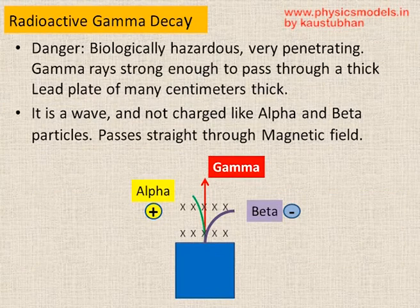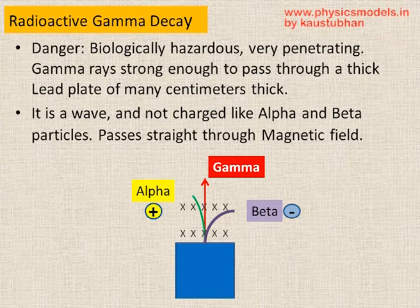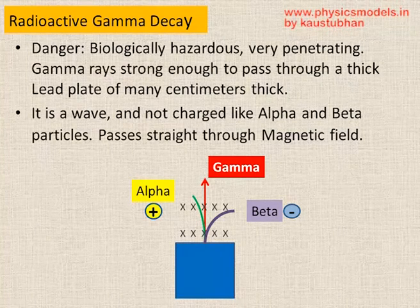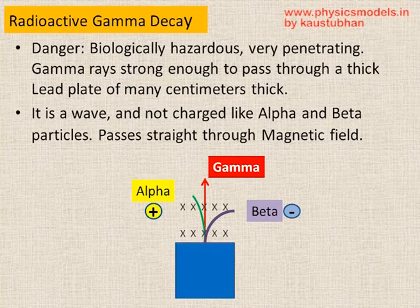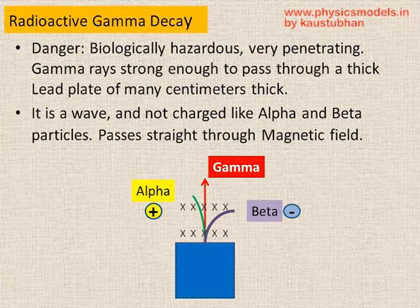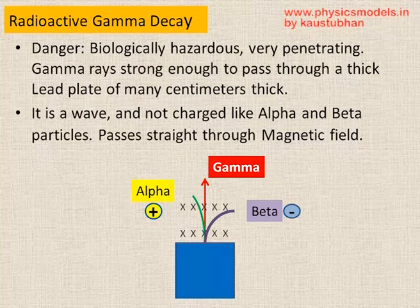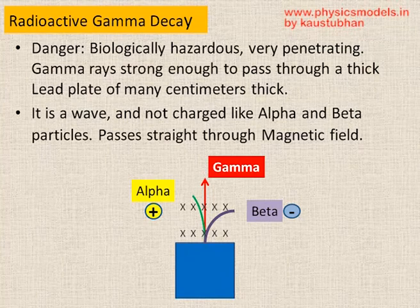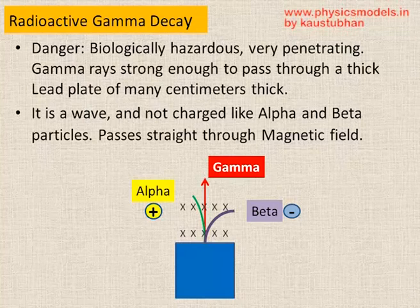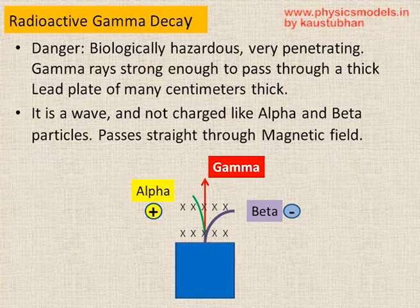The typical way of representing a radioactive decay is shown here. There is a box and there are three radiations coming out of that element in the box. The gamma ray goes straight away because it's not charged — it's a wave, not a particle with a charge. The alpha particle curves to the left if we apply a magnetic field shown by those crosses. The magnetic field is going inside the plane of the paper, away from us, and the beta particle which is negatively charged bends towards the right — it bends a lot.